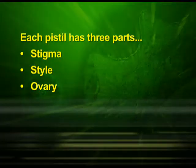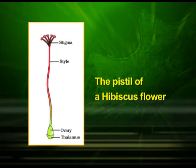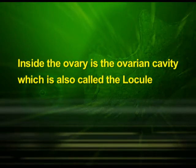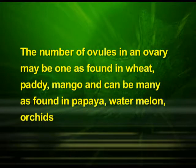Each pistil has three parts: the stigma, style, and ovary. We can observe the pistil of a hibiscus flower in this diagram, where all other floral parts are removed. The stigma serves as a landing platform for pollen grains. The style is the elongated slender part beneath the stigma. The basal bulged part of the pistil is the ovary. Inside the ovary is the ovarian cavity, also called the locule. The placenta is located inside the ovarian cavity, and arising from the placenta are the megasporangia, commonly called ovules. The number of ovules in an ovary may be one, as found in wheat, paddy, and mango, or many, as found in papaya, watermelon, and orchids.